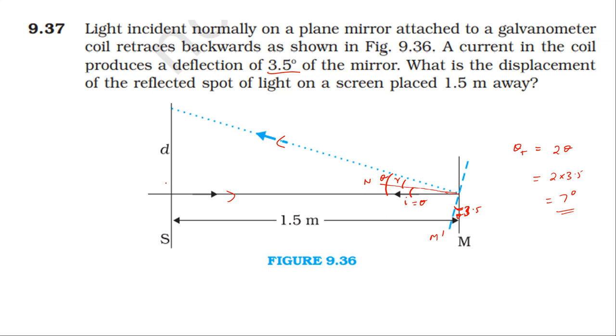In the triangle formed, tan theta equals opposite side divided by adjacent side. The adjacent side is 1.5 meters, so d equals 1.5 times tan 7 degrees.